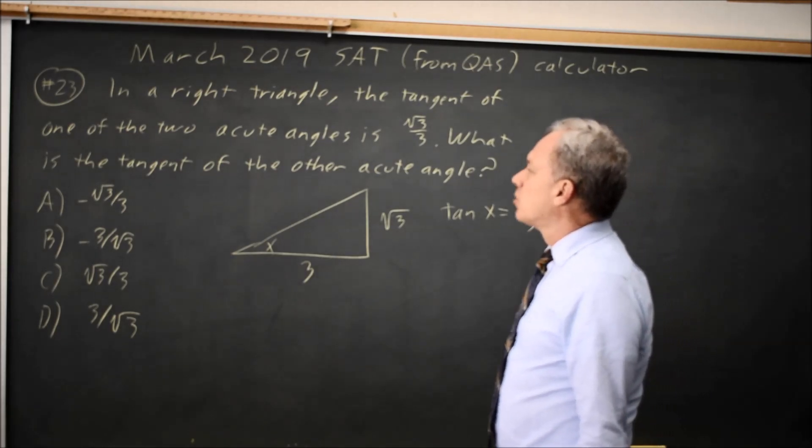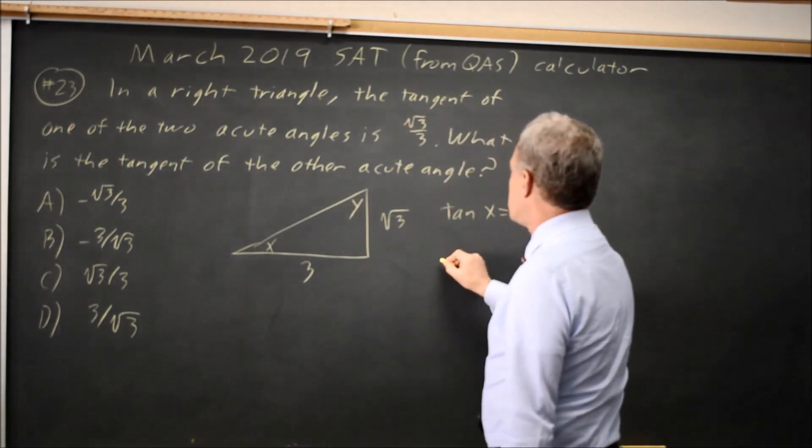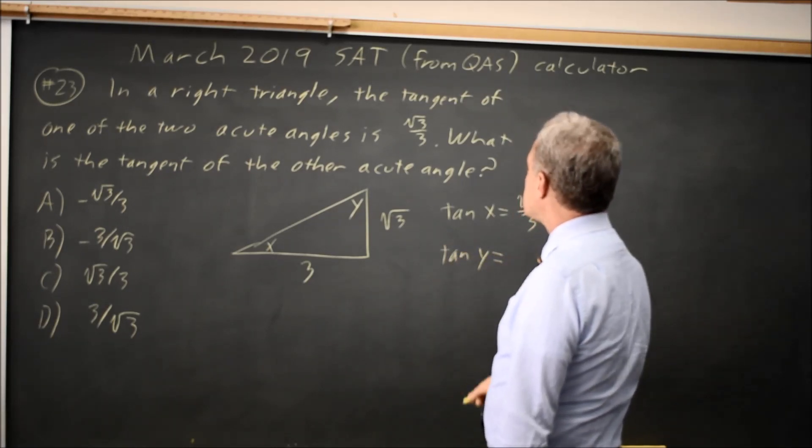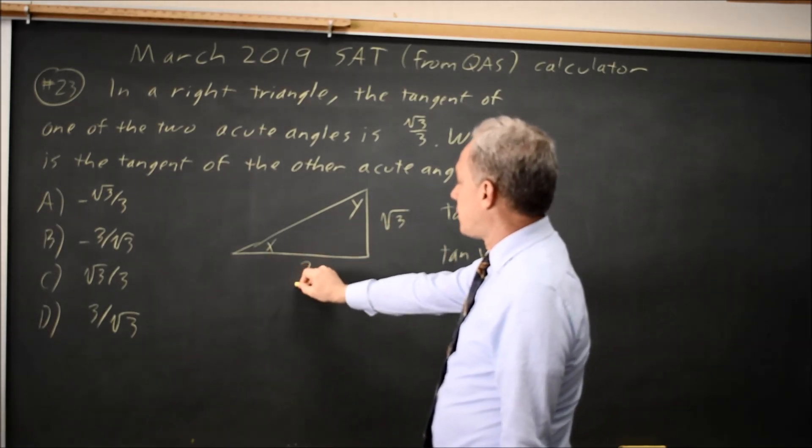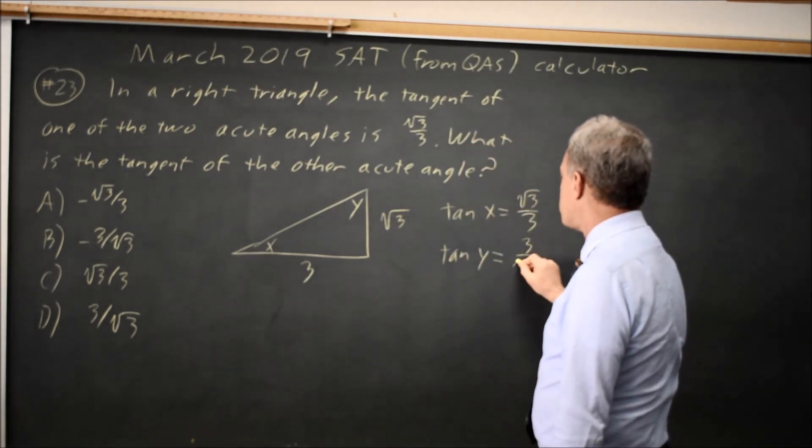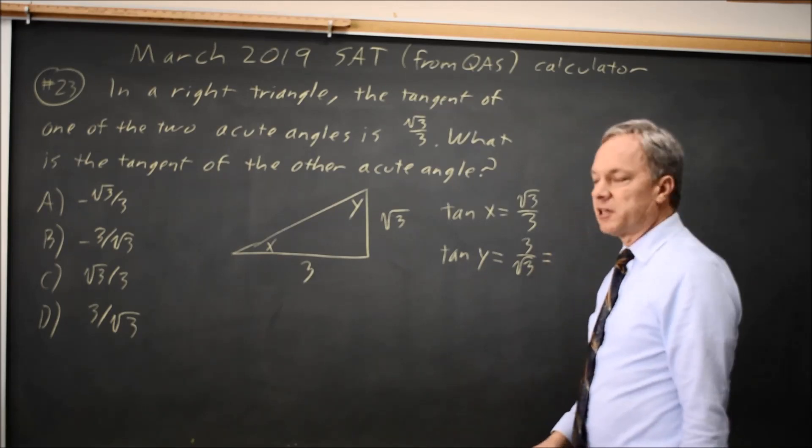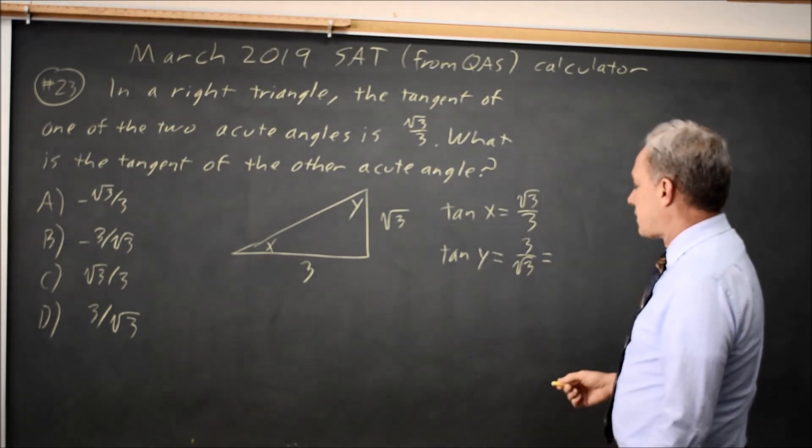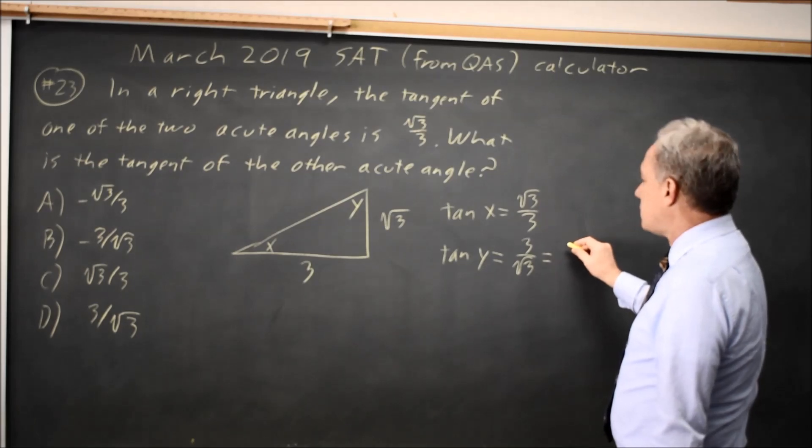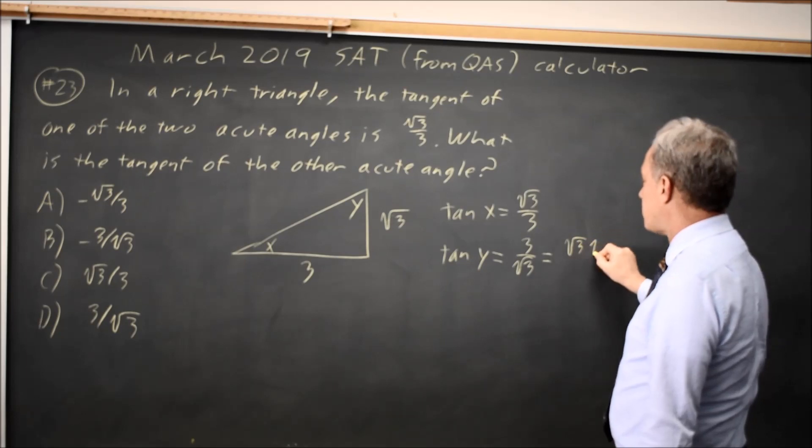And they're asking for the tangent of the other acute angle, which I'll call y. Tangent of angle y is the side opposite y over the side adjacent to y, which is 3 over root 3, which I can simplify on the calculator and get 1.732 or something like that, and then find out which of the answer choices it matches.